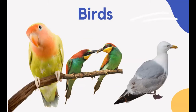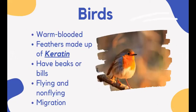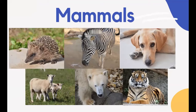Birds are warm-blooded vertebrates with a constant body temperature that stays the same even when the surrounding temperature changes. Birds are the only animals covered with feathers made of keratin. Feathers act as insulators to maintain the bird's constant body temperature, are used for flight, and help attract a mating partner. Birds have beaks or bills — bony keratin-covered projections that do not have teeth. Birds are adapted to eat a wide variety of food like insects, seeds, meat, and nectar.